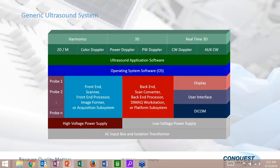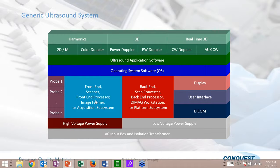Here is the basic building block diagram for an ultrasound system. At the very bottom we have our AC input box to get power to the system, then high voltage and low voltage power supplies. The front end is responsible for creating the image — we create the beam, hit the transducer with electrical pulses, those pulses go into the body, they come back reflected, and the back end analyzes and processes those signals. We have a display, a user interface where the operator tells the machine what to do, and DICOM — the language we use to transmit our images.